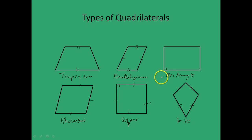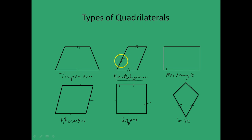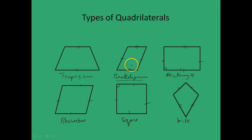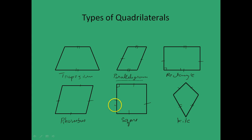Please take note that a rectangle, a rhombus, and a square are actually just parallelograms with special properties. All three of them satisfy the conditions of a parallelogram — having two sets of parallel sides and opposite sides being equal. A rectangle is a parallelogram with all angles equal to 90 degrees; a rhombus is a parallelogram where all sides are equal; and a square is a parallelogram with all sides equal and all angles 90 degrees.